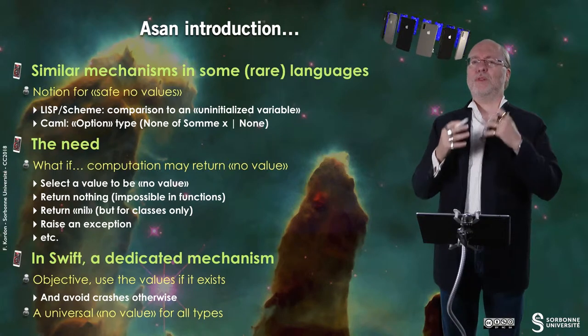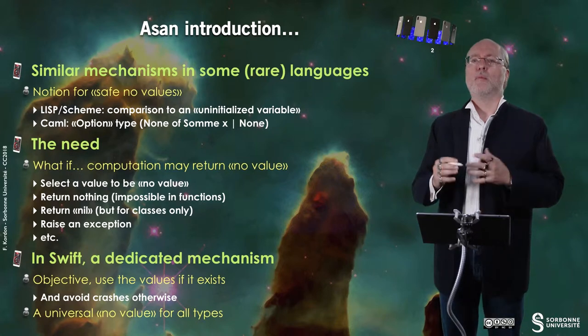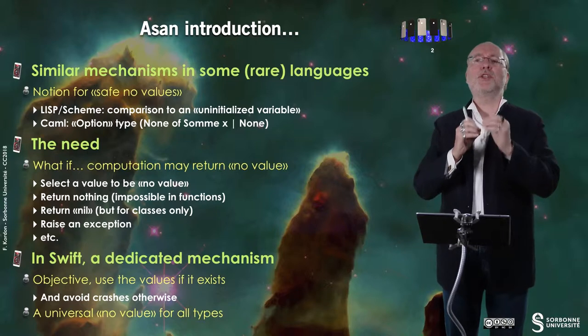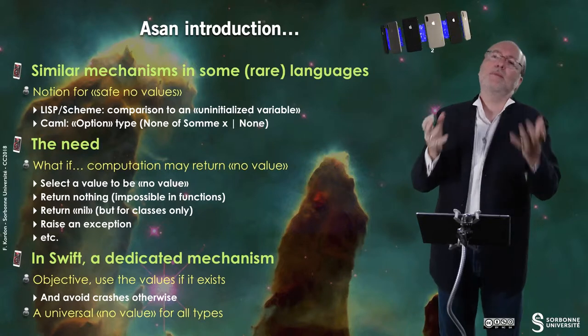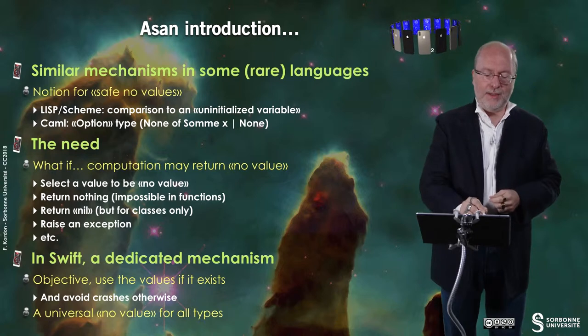Hello everybody. This video is dedicated to the notion of optionals in Swift. There exist similar mechanisms in some rare languages. In the Lisp/Scheme family, there is a notion of uninitialized variable you can make some comparison to, and that has a similar role to optionals in Swift. Also in CAML, you have something called an option type that allows a similar comparison and lets you detect when a variable is not initialized.